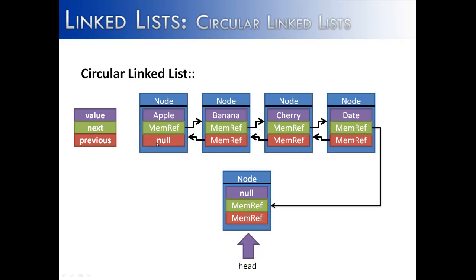The front node, where it's pointing to null right now, is going to point to the sentinel node also. And then the sentinel node's next value would be this first node here, and its previous value would be the last node in the list.